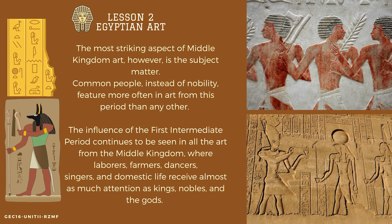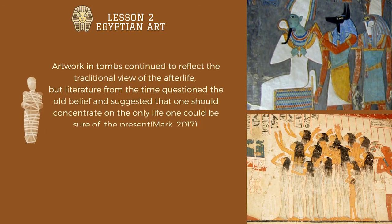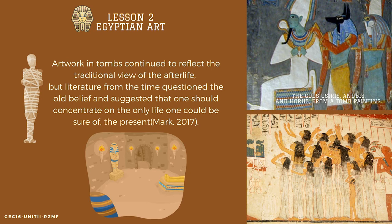The influence of the first intermediate period continues to be seen throughout Middle Kingdom art, where laborers, farmers, dancers, singers, and domestic life receive almost as much attention as kings, nobles, and the gods. Artwork and tombs continue to reflect the traditional view of the afterlife, but literature from the time questioned the old belief and suggested concentrating on the only life one could be sure of — the present. These are some examples of their artwork and tombs, including the gods Osiris, Anubis, and Horus from a tomb painting.